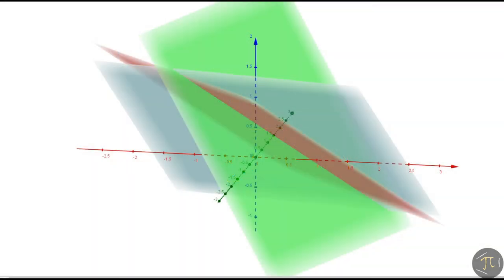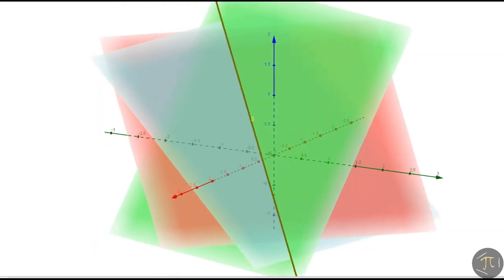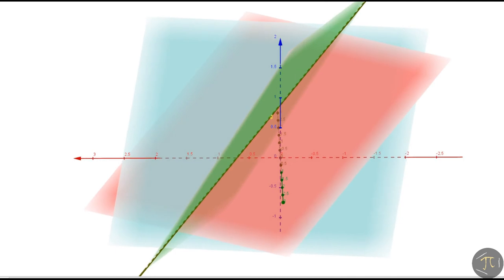Graphically, this time we have three planes again but all of them intersect at a common line. This entire line of points is the solution to our problem. Now, let's look at the column picture for these two problems.